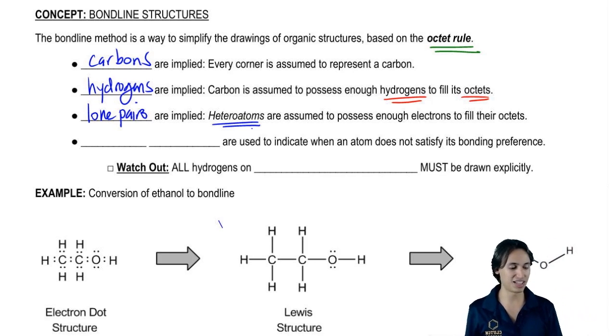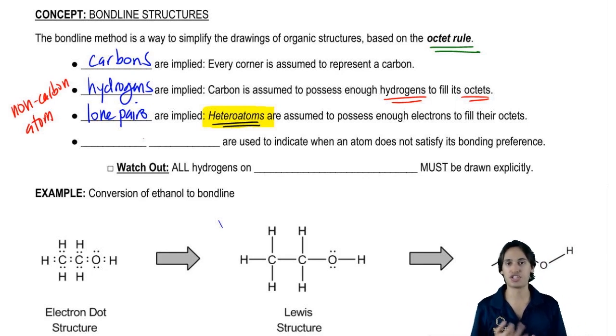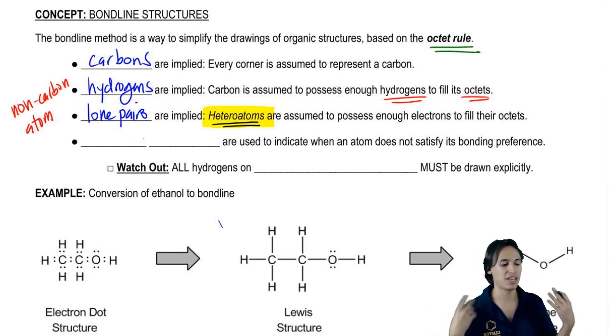By the way, I have to define something. What is a heteroatom? A heteroatom is just any atom that is different from carbon. I'm actually just going to say it's a non-carbon atom. So nitrogen, oxygen, fluorine, all of those would be heteroatoms and we're not going to draw lone pairs.